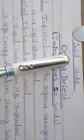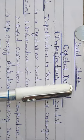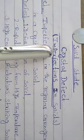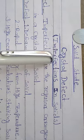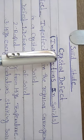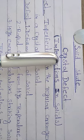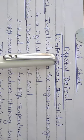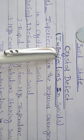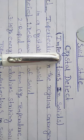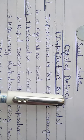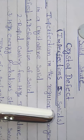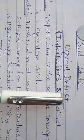Good morning students, this is lecture number 11 of solid state. You have learned lots of things about crystalline solids, including different types of 3D or 2D arrangements of crystals. Today we have to learn a new topic for crystals, known as crystal defect, or we may say imperfection in solids.